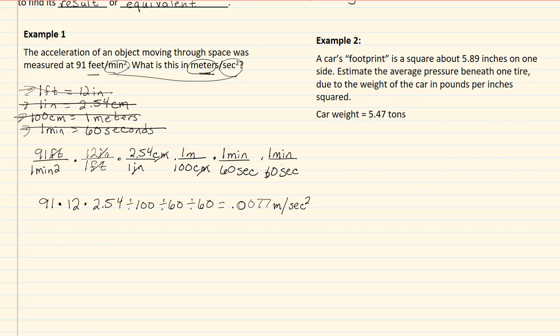Let's take a look at our second example. In our second example, it says a car's footprint is a square about 5.89 inches on one side. Estimate the average pressure beneath one tire due to the weight of the car in pounds per inches squared. They give us the weight of the car.